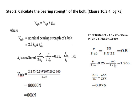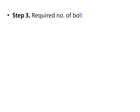Calculating e/(3d₀), p/(3d₀) − 0.25, fub/fu, and 1, the smallest value of Kb is 0.5. Placing all values: Vnpb = 2.5 × 0.5 × 10 × 20 × fu, where 10 mm is the thickness of the thinner plate and 20 mm is the bolt diameter. This gives the bearing strength.